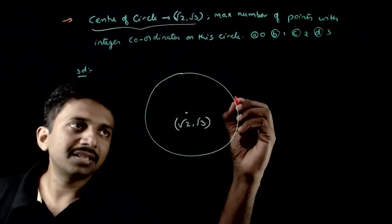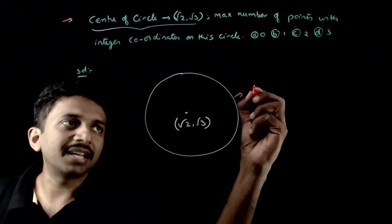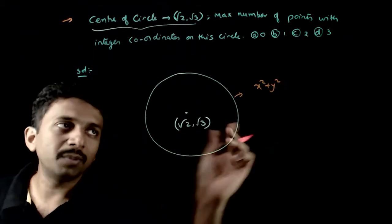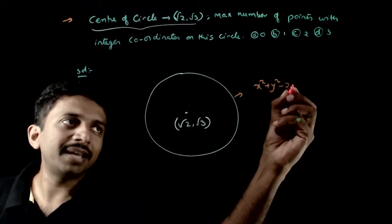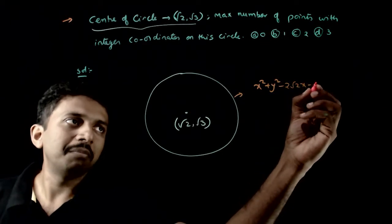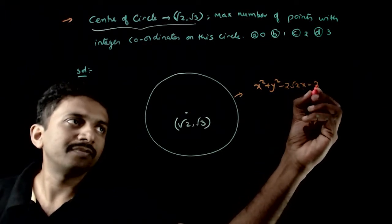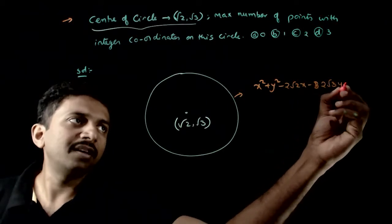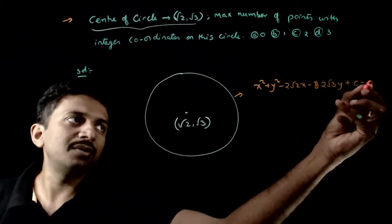So what you do is, let us assume the equation of this circle is x² + y² with center √2 comma √3, so minus 2√2x minus 2√3y plus some c is equal to 0.